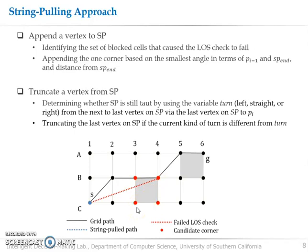We choose one by calculating angle between P minus 1, which is B3, and SP end, and Pi. Based on these four candidate vertices, B3 has the smallest angle, so it is appended to SP.